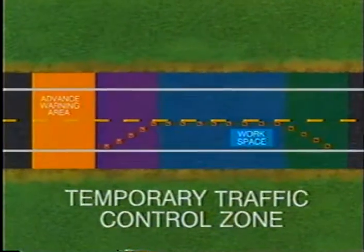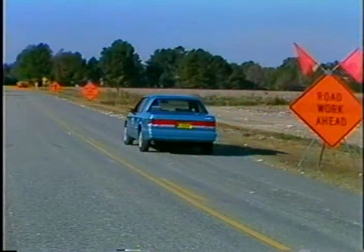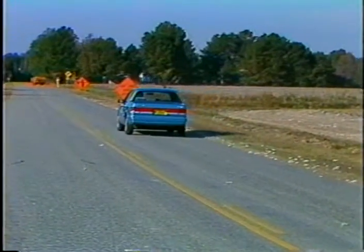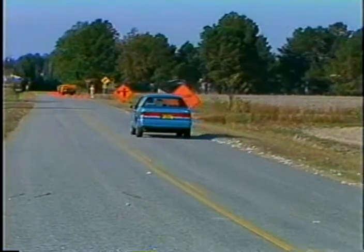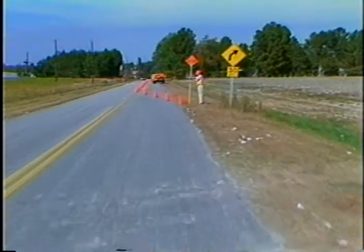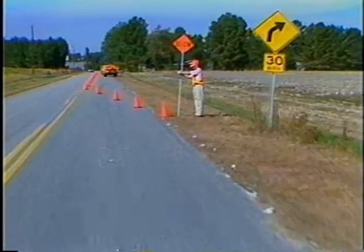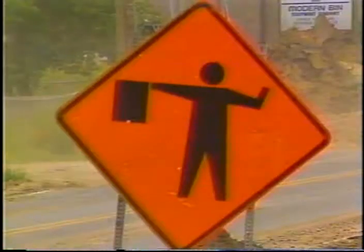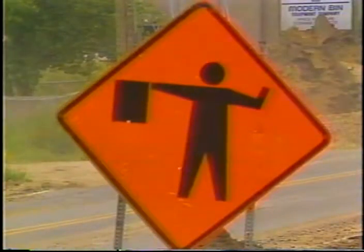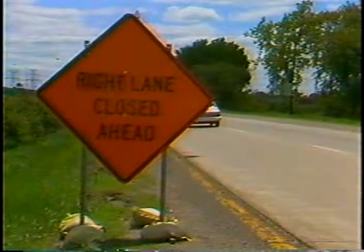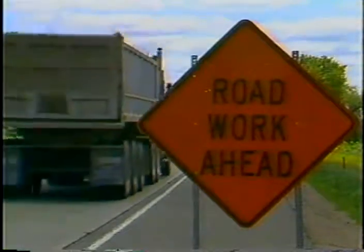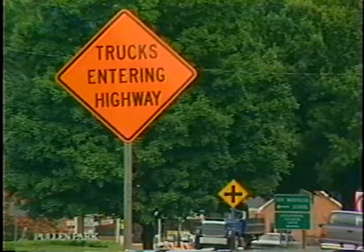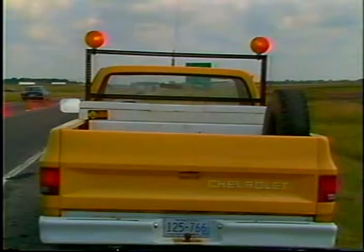The advance warning area prepares drivers and alerts them to what's coming. An advance warning area is necessary for all traffic control zones because drivers need to know what to expect. Before reaching the work area, drivers should have enough time to adjust their driving patterns. In the advance warning area, traffic control zones may vary from a series of signs starting a mile in advance of the work area to a single sign or flashing lights on a vehicle.